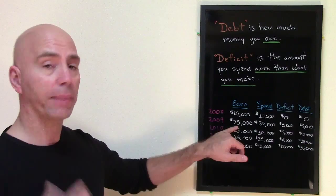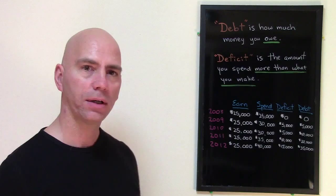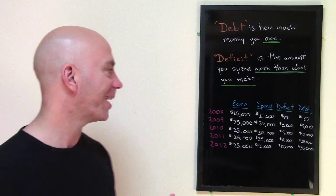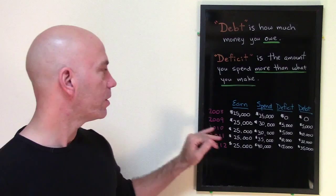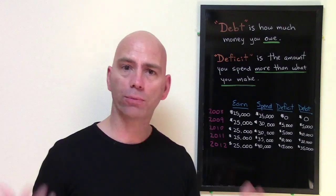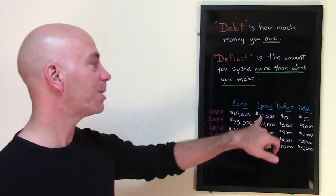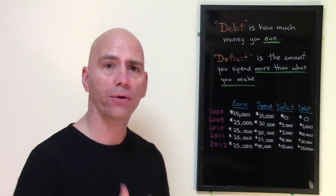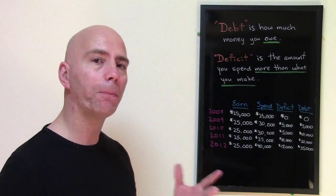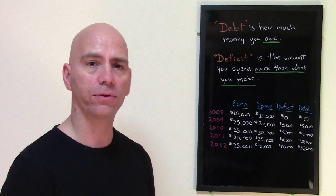Now let's go to the year 2009, where you made again — every year you make the same amount of money. Your boss is not giving you a raise. Maybe you need to work harder. So you earn $25,000 every year. In 2009 you earned $25,000, but you had some problems. Maybe you needed to buy a car or you needed to take a vacation, something. And you spent $30,000.